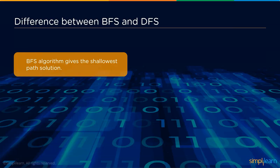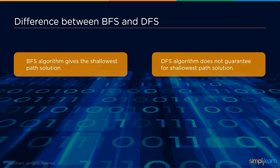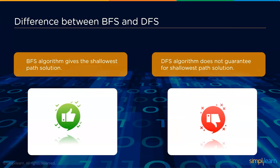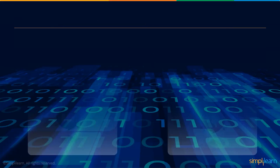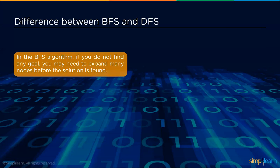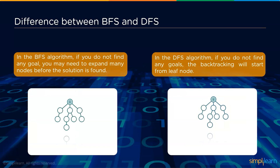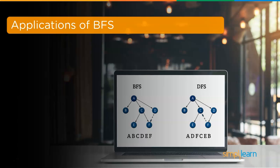BFS gives the shallowest path to the solution, whereas DFS does not guarantee the shallowest path. In BFS, if no goal is found you may need to expand to other nodes before the solution is found. In DFS, if no goal is found, backtracking starts from the leaf node.